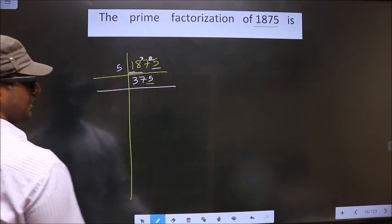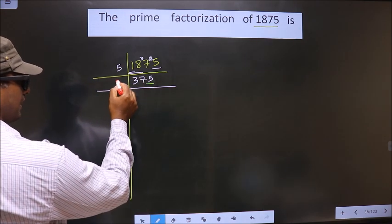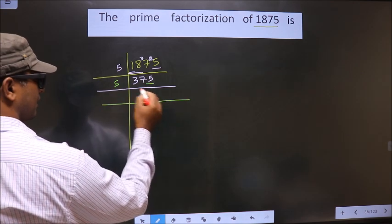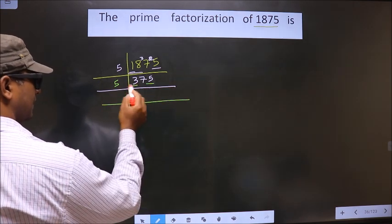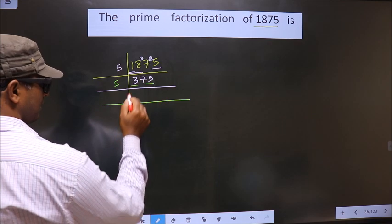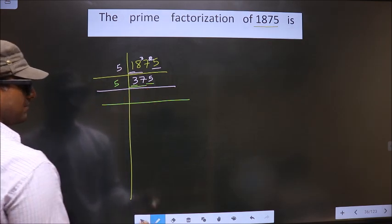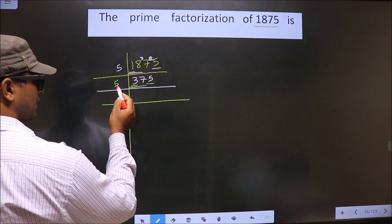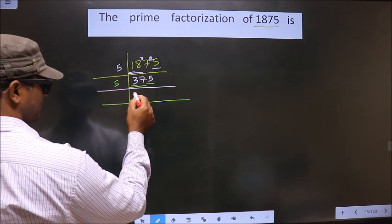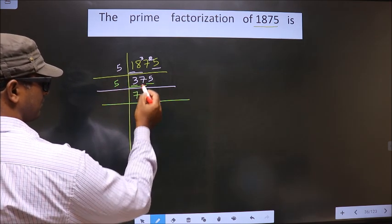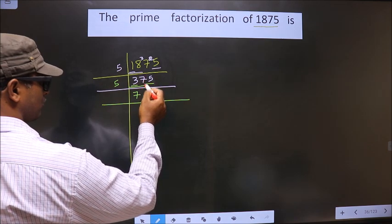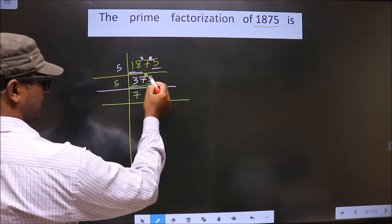Now, for this number, last digit is 5, so you take 5 here. Now, first number is 3, 3 is smaller than 5, so you take 2 numbers, that is 37. Closer to 37 in 5 table is 5 times 7 is 35. 37 minus 35 is 2, 2 carried forward making it 25.